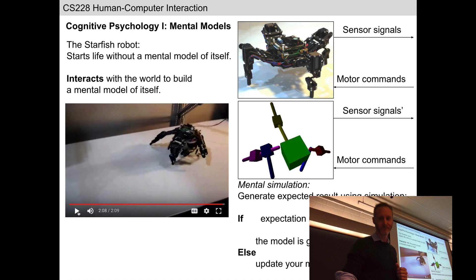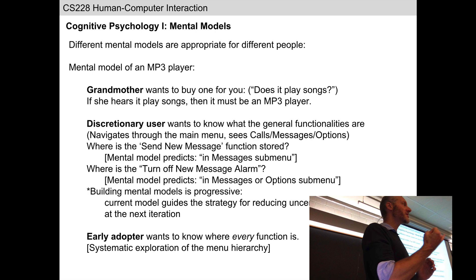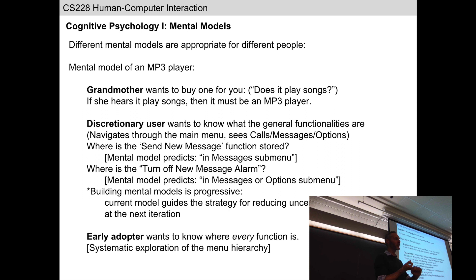We've just touched on several aspects of mental models that are important: we don't necessarily need a perfect model of reality. In fact, the word 'model' means an approximation or abstraction of all the detail that's out there. It also depends on the activity of the person carrying the mental model, and the context and particular person themselves. Consider an MP3 player: for someone who doesn't know much about technology, if it plays a song, it's an MP3 player — smartphones and many other devices play songs too.